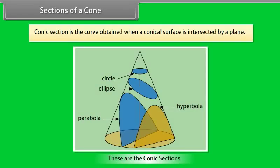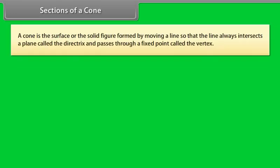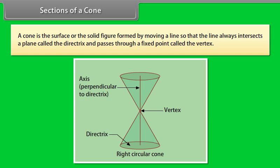Conic section is the curve obtained when a conical surface is intersected by a plane. A cone is the surface or solid figure formed by moving a line so that the line always intersects a plane called the directrix and passes through a fixed point called the vertex.